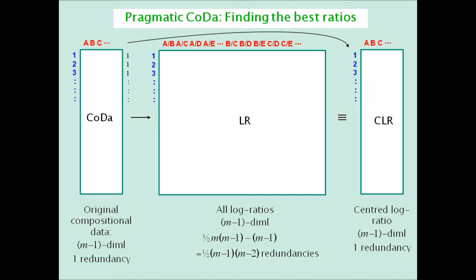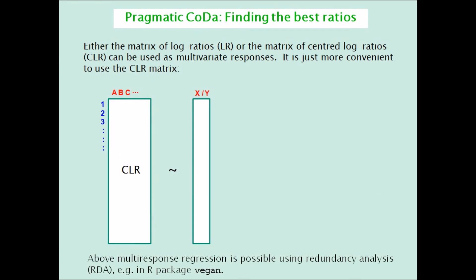This CLR matrix is equivalent to the LR matrix for computational purposes. It is also of dimensionality or rank m-1, so it has one redundancy. So the CLR matrix is set up as a multi-response matrix, and the question is which log ratio best explains it?